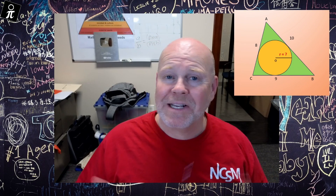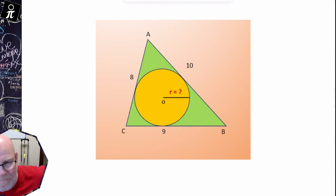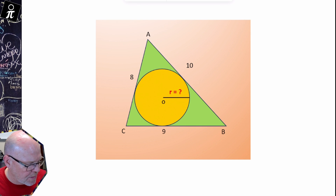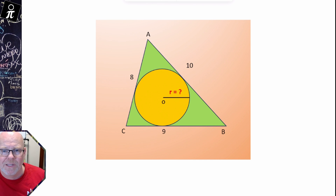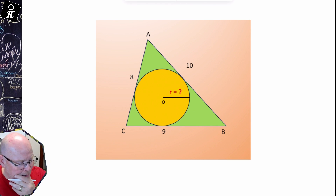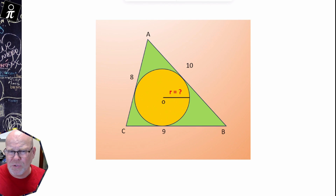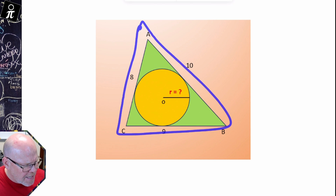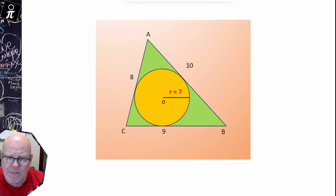I saw this problem on X and thought we would give it a try. We've got a triangle with a circle inside it. Whenever we're talking about a triangle, it's kind of nice if we have the height, and we don't have the height of this triangle. We're asked to find the radius, so we're probably going to have to use the area of the triangle in some fashion. Since we don't have the height, we're going to have to use Heron's formula.